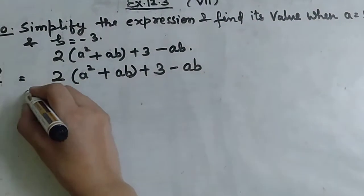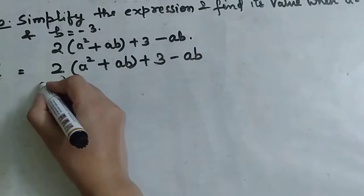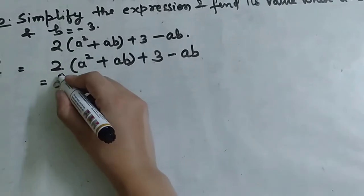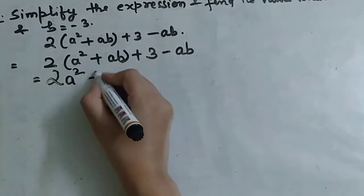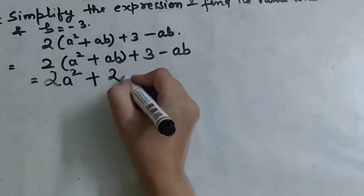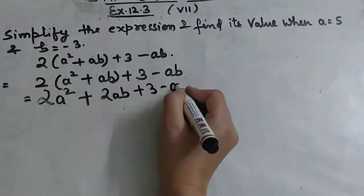First of all, we need to simplify the expression. We multiply 2 with a² plus ab, which gives us 2a² plus 2ab plus 3 minus ab.